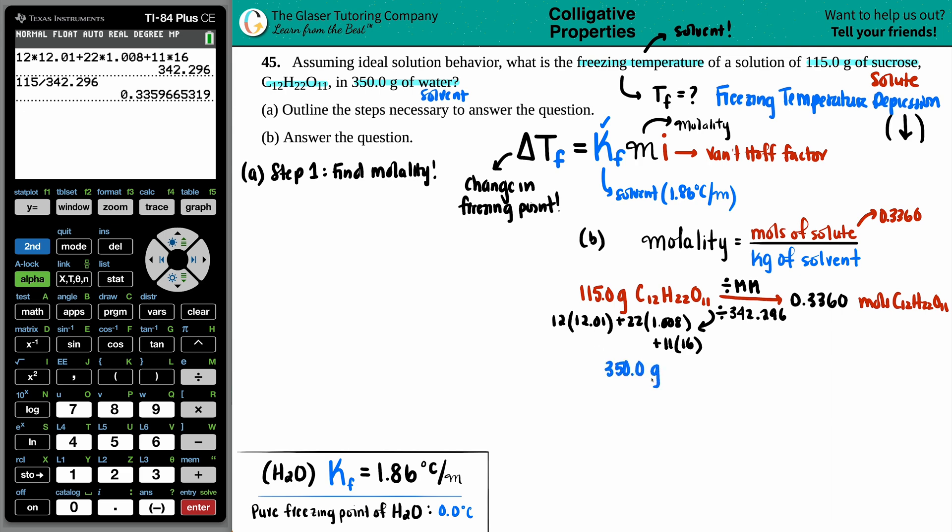Now we need the kilograms of the solvent. We just found out the moles of the solute, 0.3360. Now let's find those kilograms. They gave us 350.0 grams of H2O. So I just need to go to kilograms of H2O. Grams to kilograms, divide by 1,000. You could take that decimal, move it to the left three times. So this would be 0.3500. And that is the number for kilograms of the solvent.